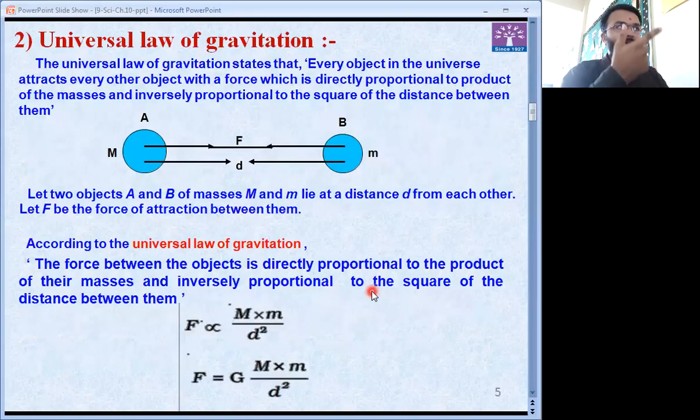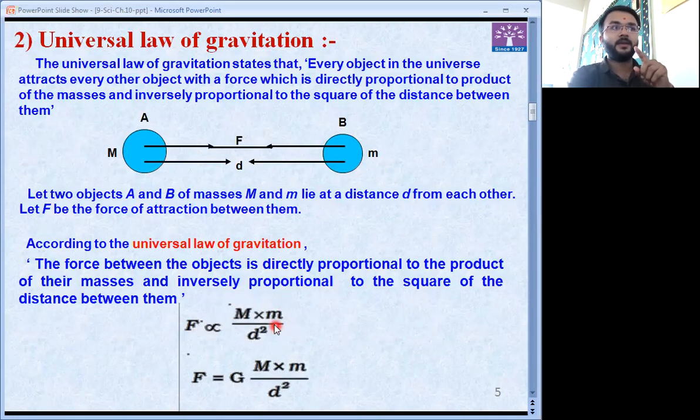Now, the next topic is universal law of gravitation. Dear students, universal law of gravitation states that any force between two objects, for example A has capital M mass and B has a small m mass and small d is the distance between these two objects. And according to the statement, force is proportional to the multiplication of masses of both the objects and inversely proportional to the square of distance between them. So this is the mathematical expression and here is the statement.